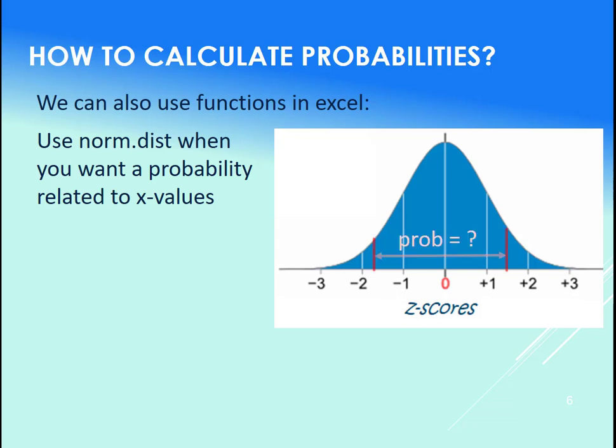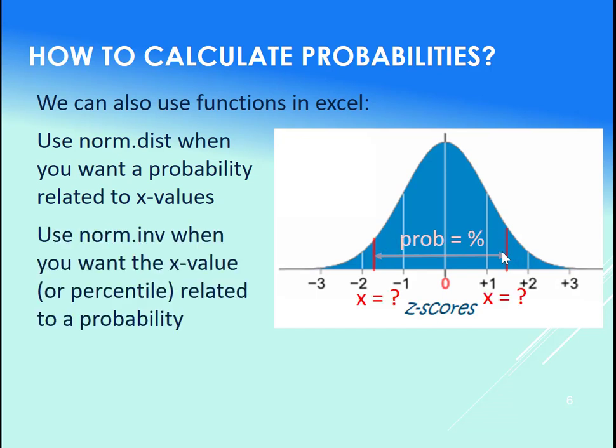So if we wanted the probability between two different x values, you would use the norm.dist. We'll talk more about that later.